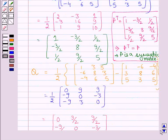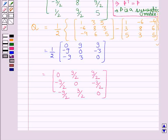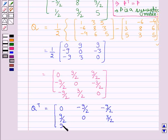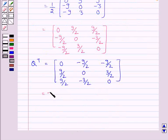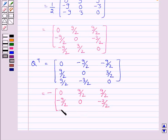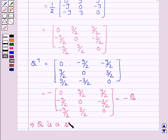Now let us show that Q is a skew symmetric matrix, that is Q transpose equals minus Q. Q transpose is: 0, −9/2, −9/2; 9/2, 0, 3/2; 9/2, −3/2, 0. Taking the negative gives: 0, 9/2, 9/2; −9/2, 0, −3/2; −9/2, 3/2, 0. This equals minus Q, which implies that Q is a skew symmetric matrix.